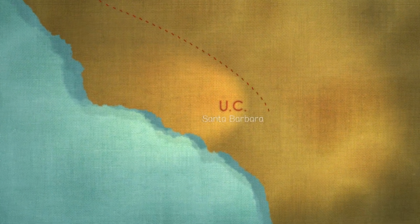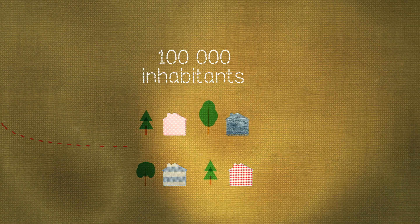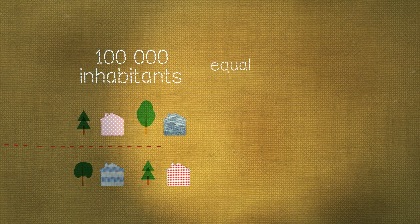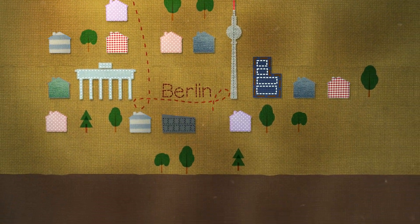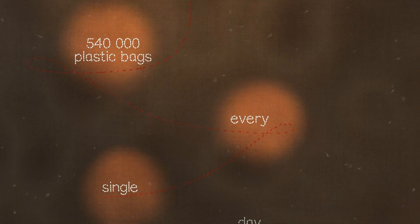According to a research team from the University of California at Santa Barbara, a city of 100,000 inhabitants releases a wash-related volume of microfibers equivalent to 15,000 plastic bags. A city the size of Berlin thus is responsible for 540,000 plastic bags every single day.